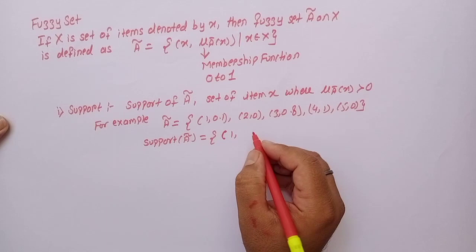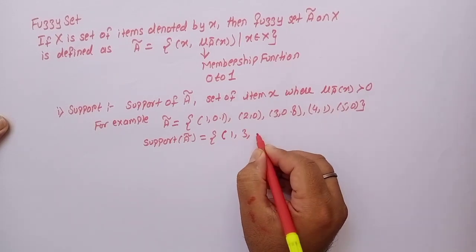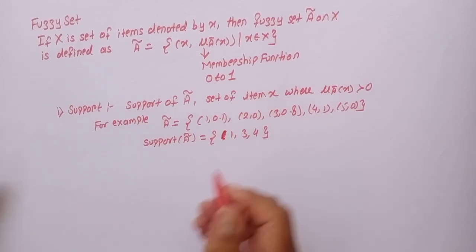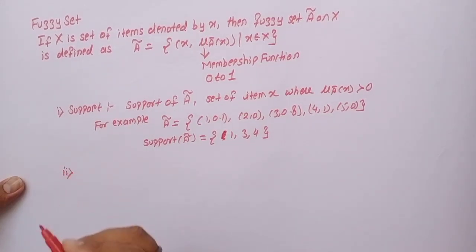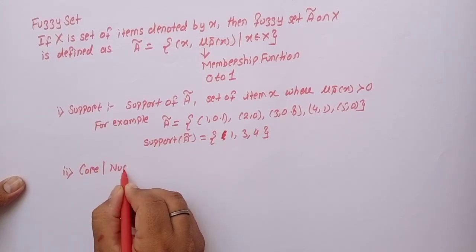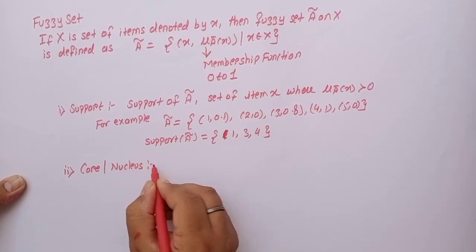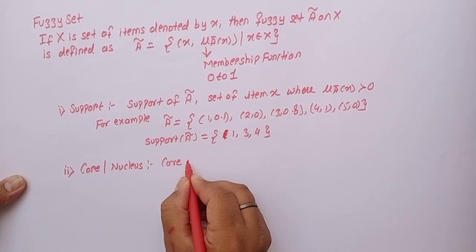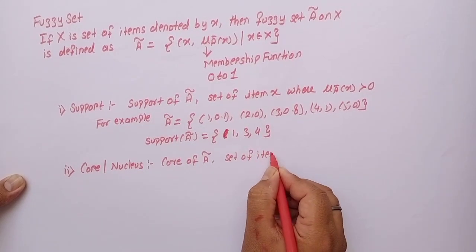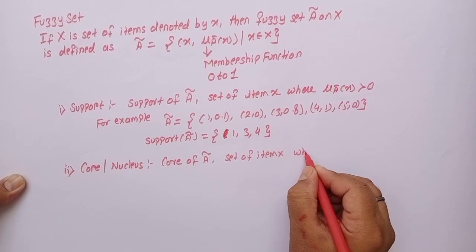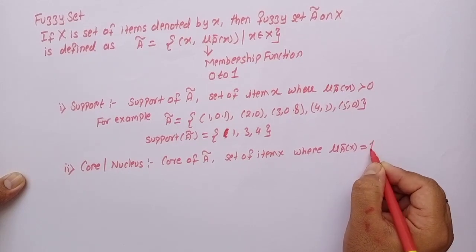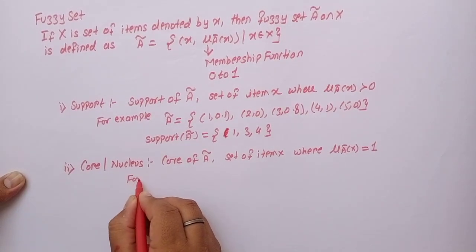Now next important thing is core. Core is also known as nucleus. Core of fuzzy set A is set of item x where membership of x equals one.